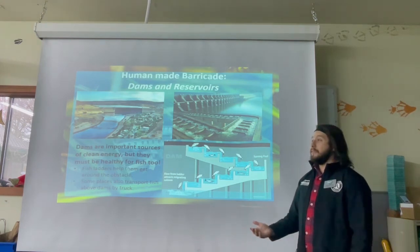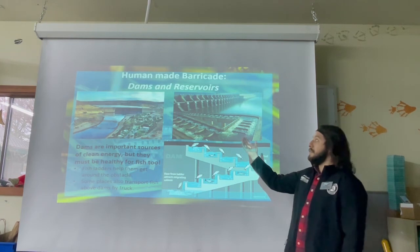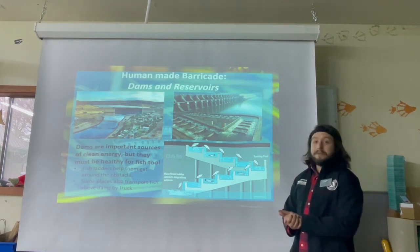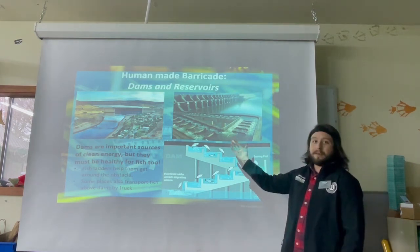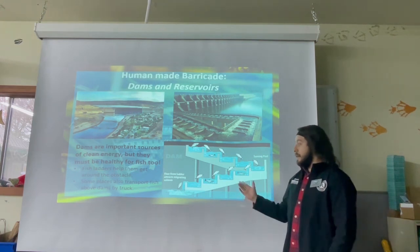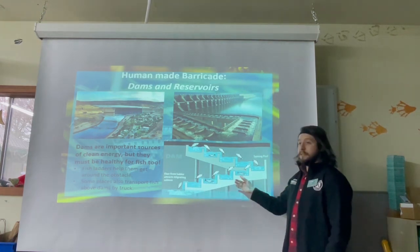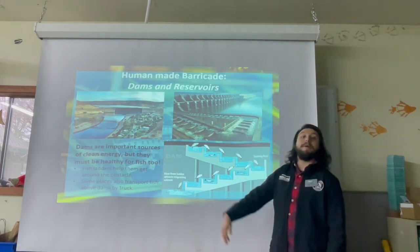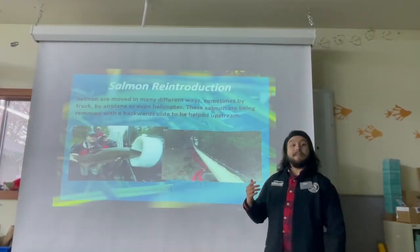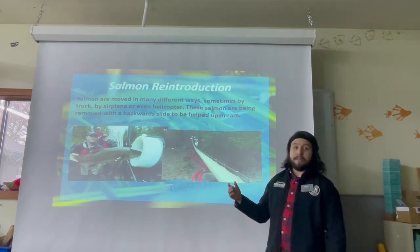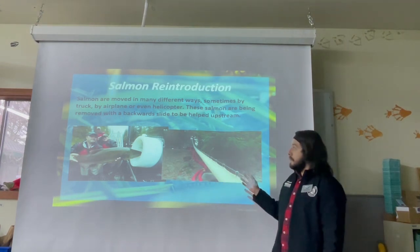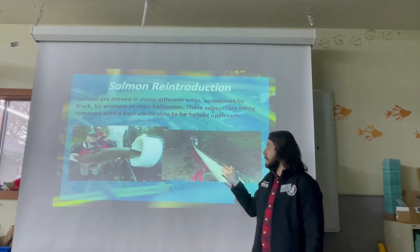Human-made barricades like dams and reservoirs are a significant threat, though dams do provide clean energy and drinking water. To compensate for salmon, people have built fish ladders so salmon can travel upward past dams and reservoirs to complete their life cycle. In addition to fish ladders, humans may use helicopters, airplanes, or trucks to transport salmon upstream, and sometimes reverse slides to help them through as well.